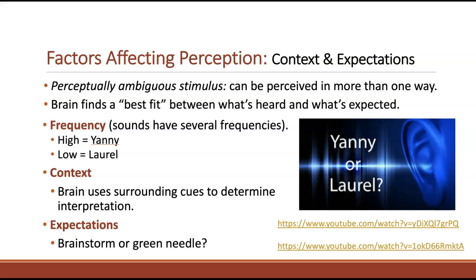You are primed to hear Yanni or Laurel because you're told it's one or the other. One of the best examples demonstrating how expectations influence what we hear is the 'brainstorm or green needle' audio. As you listen, think either 'brainstorm' or 'green needle' and keep switching — whatever you think before you hear it is what you'll hear. It's an ambiguous sound and your brain does not know what it's hearing, so if you tell it you're about to hear 'brainstorm,' it will perceive that; if you tell it 'green needle,' it will perceive that instead. It's using your expectation to interpret the sound.